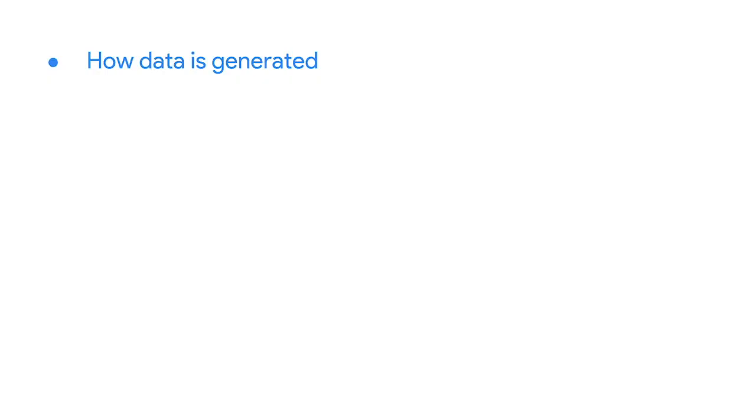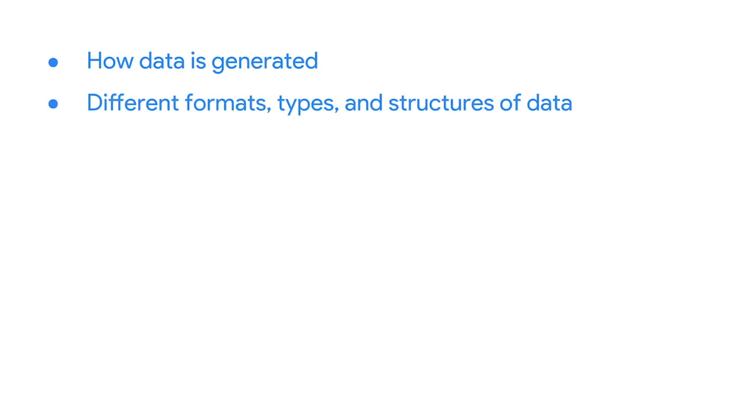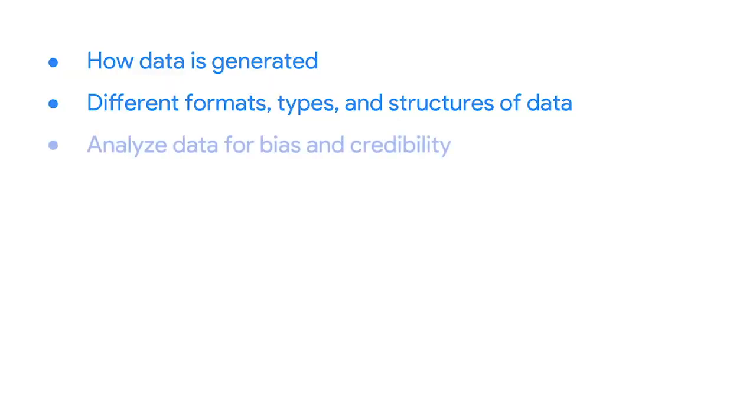In this course, you'll continue sharpening those skills. You've already heard a lot about the data analysis process steps: ask, prepare, process, analyze, share, and act. Now it's time to learn how to prepare the data. You'll learn to identify how data is generated and collected, and you'll explore different formats, types, and structures of data. We'll make sure you know how to choose and use data that'll help you understand and respond to a business problem. And because not all data fits each need, you'll learn how to analyze data for bias and credibility.